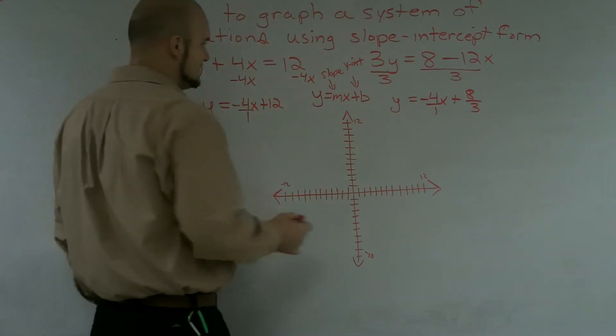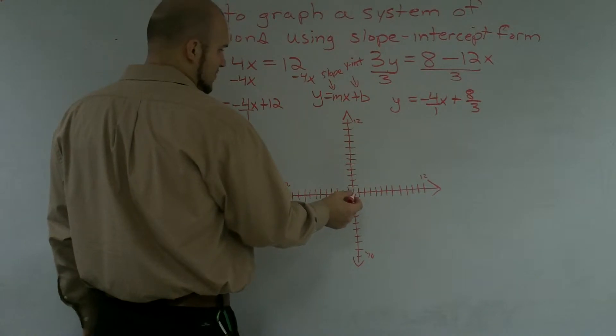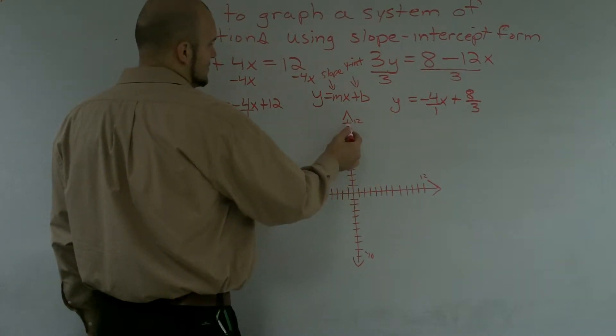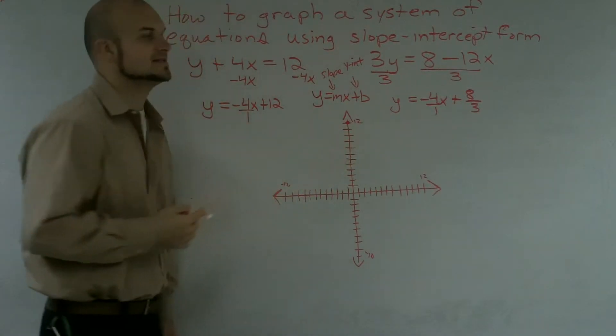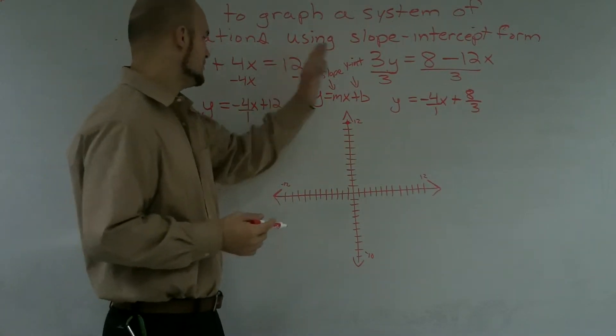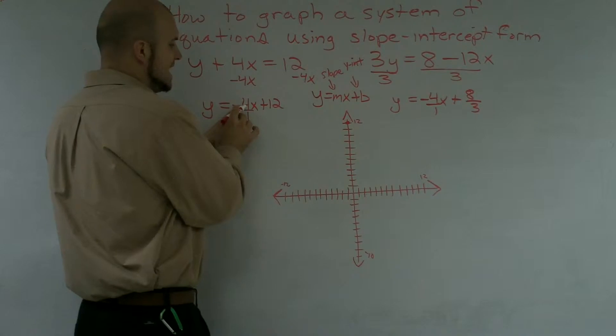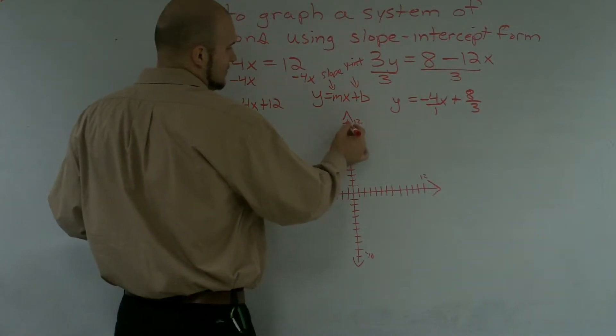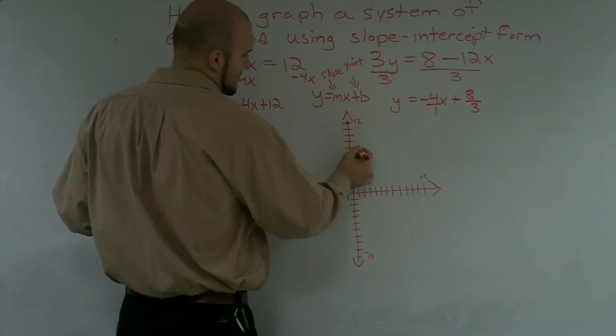So to graph this, I'll go up to my y-intercept, which is 12. So I go up to 12: 1, 2, 3, 4, 5, 6, 7, 8, 9, 10, 11, 12. And I kind of run out of space on my graph. So I can't go up 1 over 1, but I can go down 4 to the right 1. So down 4, 1, 2, 3, 4, to the right 1.